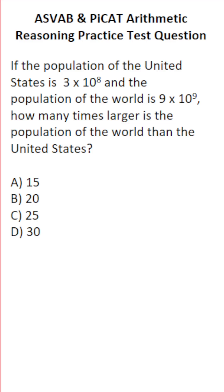This arithmetic reasoning practice test question for the ASVAB and PIKET says: if the population of the United States is 3 times 10 to the 8th and the population of the world is 9 times 10 to the 9th, how many times larger is the population of the world than the United States?